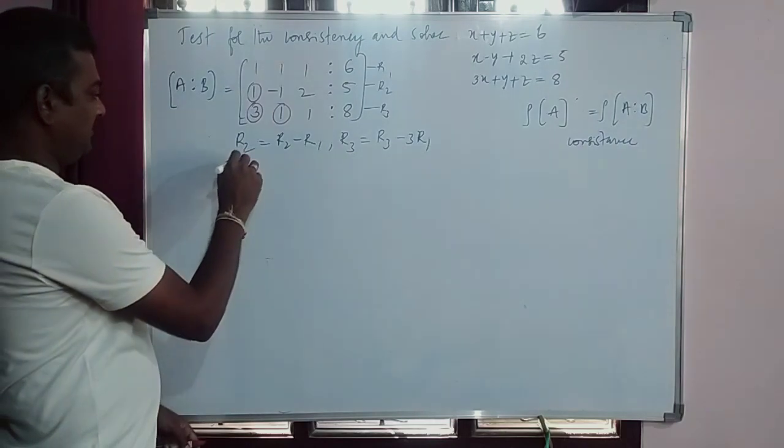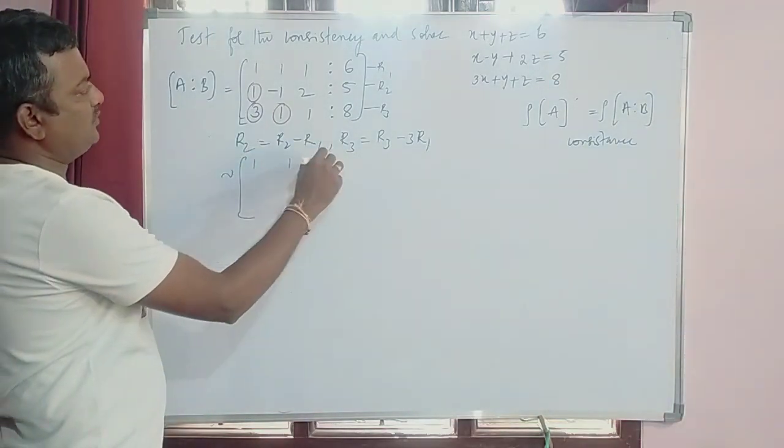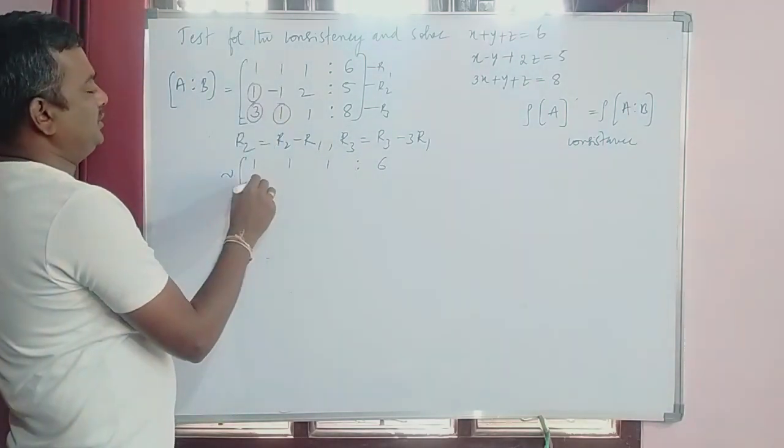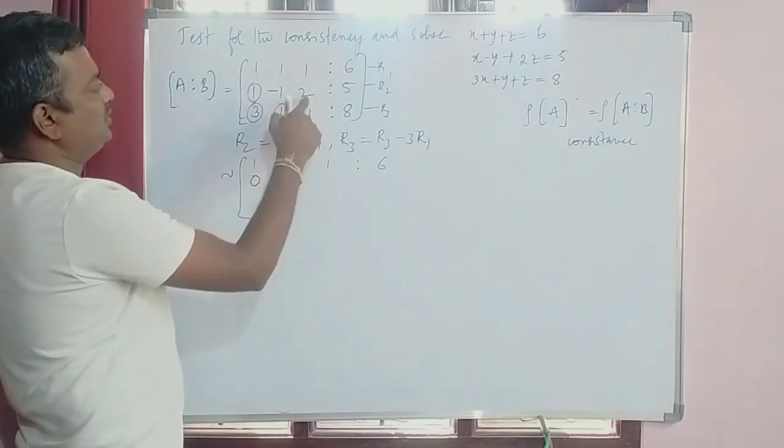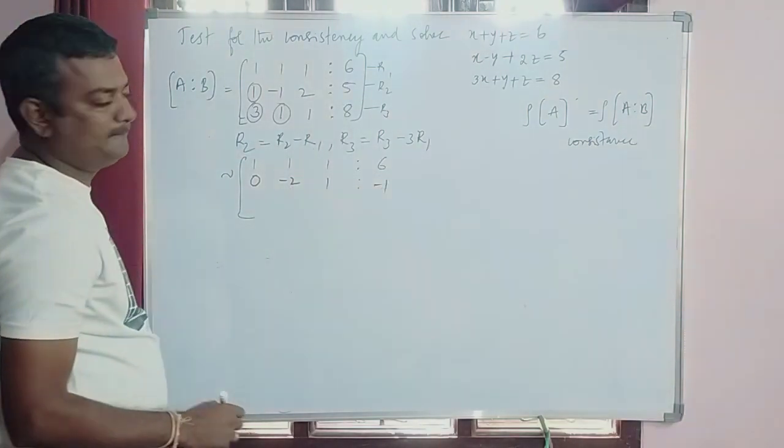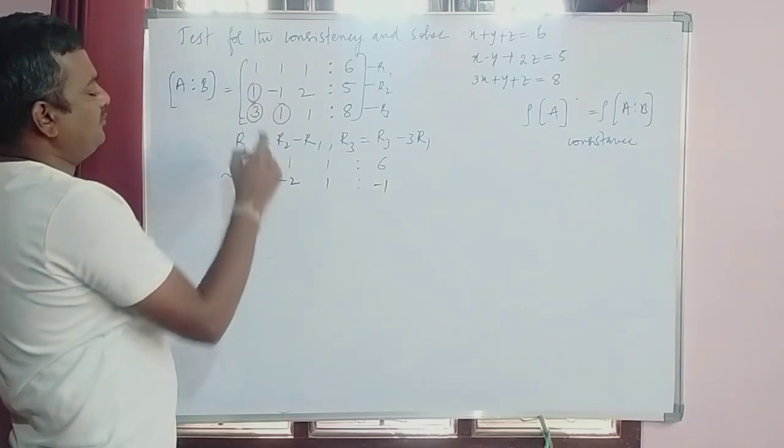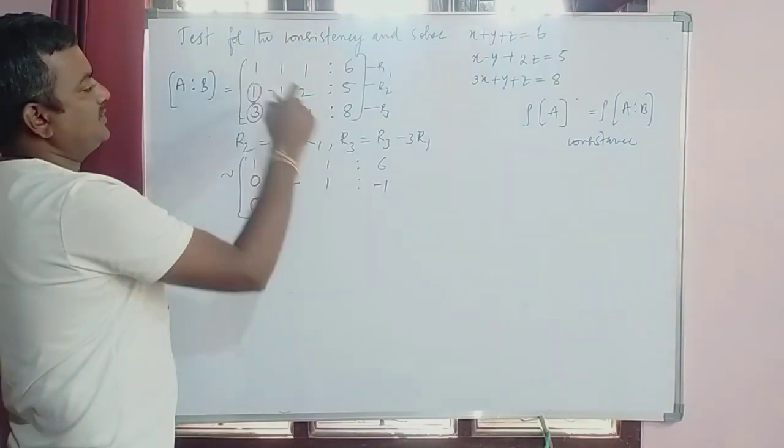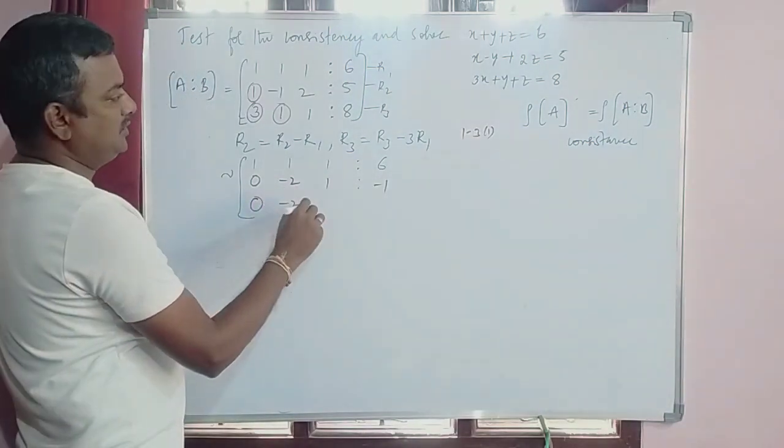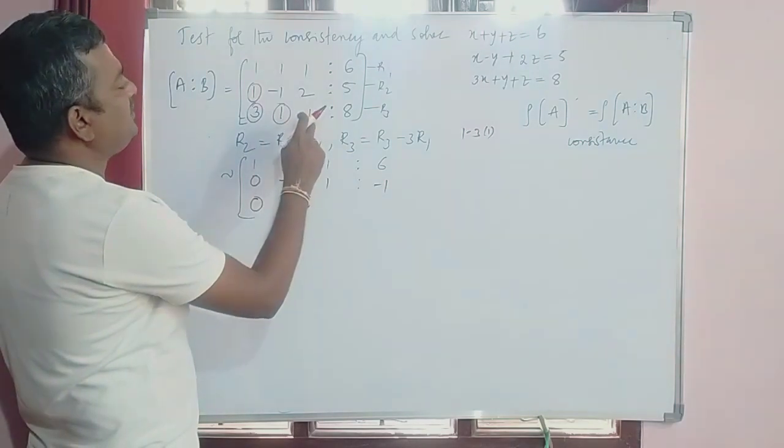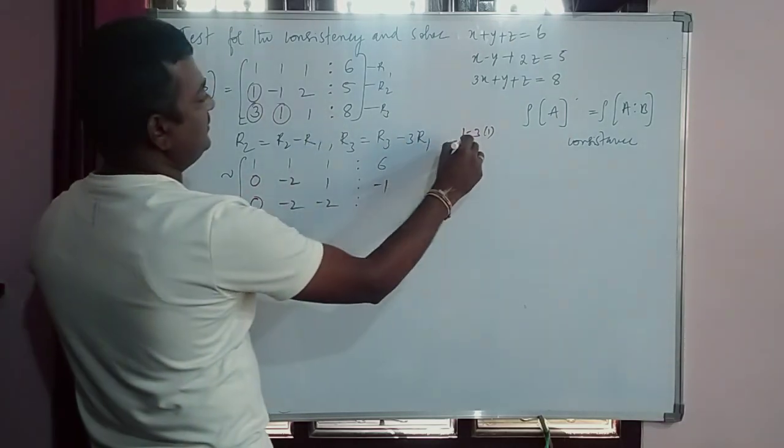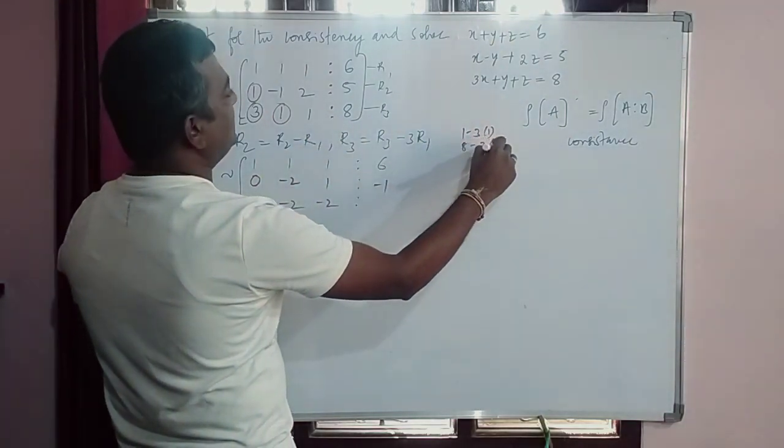So now 1, 1, 1 acts as equivalent. First row there is no change, 1, 1, 1, 6. Now R2 minus R1: 0, -1-1 is -2, 2-1 is 1, 5-6 is -1. Third row, 3 minus 3 times 1 is 0, 1 minus 3 times 1, so 1 minus 3 is -2, 1 minus again -2, 8 minus 3 times 6 is -10.